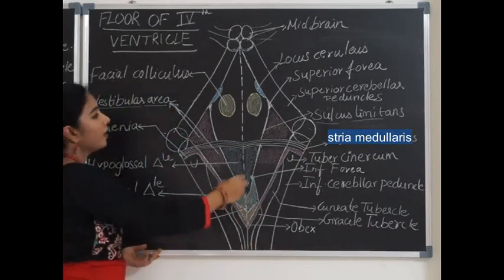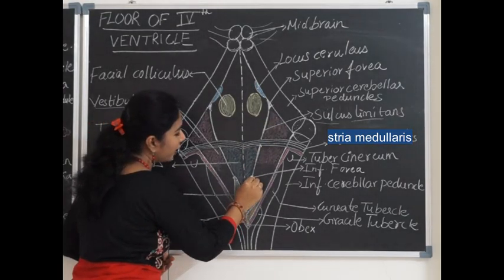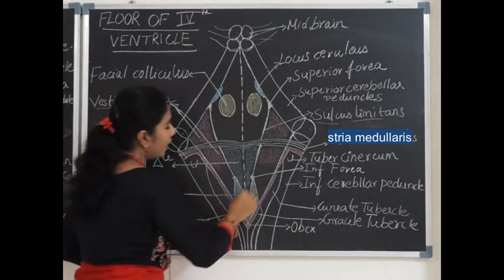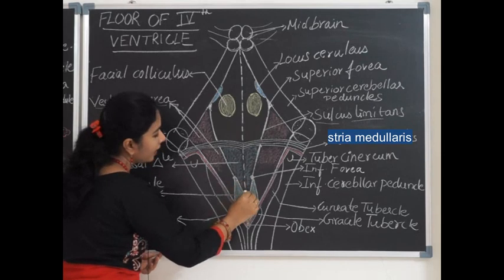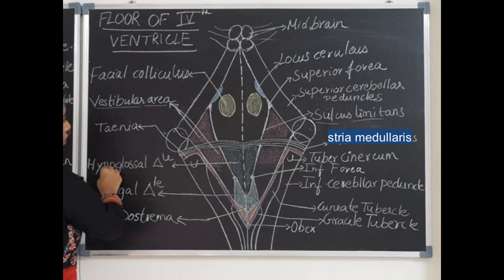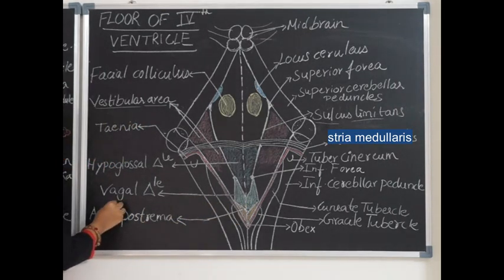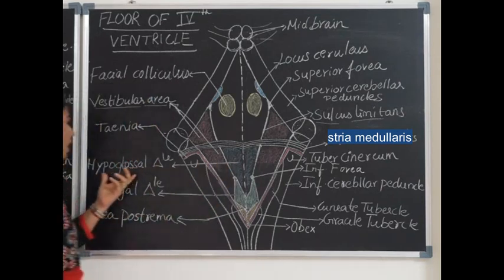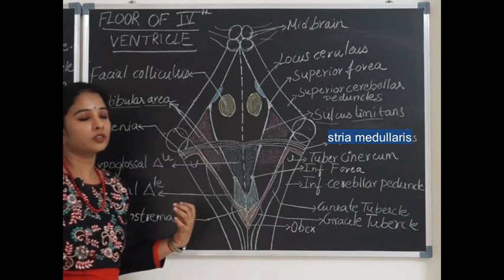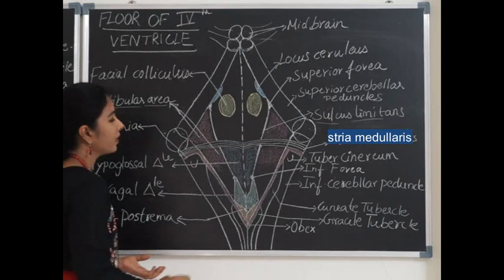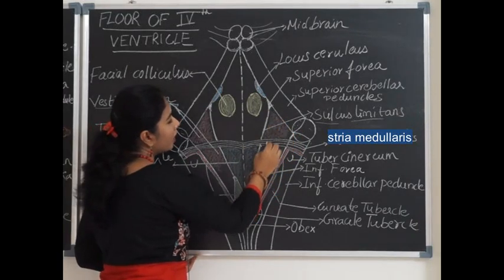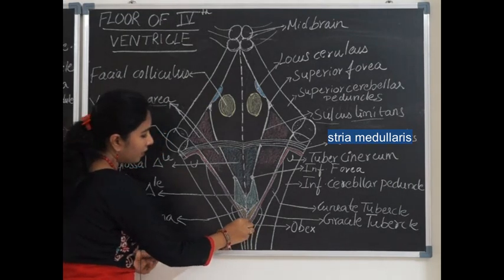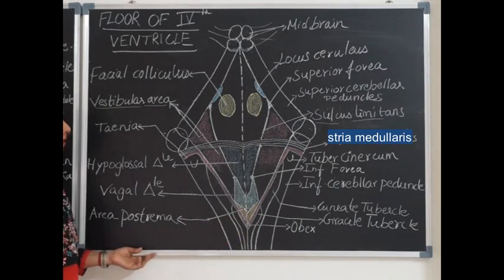At the lower end, the sulcus limitans ends in the inferior fovea, a depression in the lower part of the fourth ventricle. The sulcus limitans then runs as an oblique line dividing the inferior part into a medial triangle called the hypoglossal triangle and below it the vagal triangle. The hypoglossal nuclei and nucleus intercalatus are present deep to the hypoglossal triangle. Deep to the vagal triangle are the nucleus ambiguus and dorsal nucleus of vagus. The lateral area common between the pons and medulla is called the vestibular area, as vestibular nuclei are present deep to it.